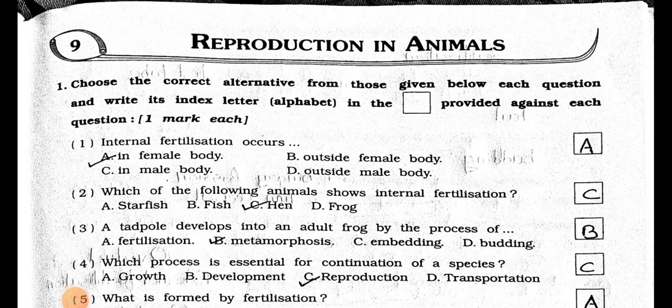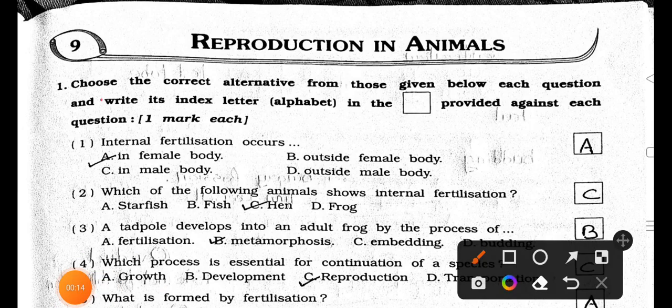Hello students, how are you all? I hope you all are fine. Today we'll see Standard 8, Subject Science. In that, chapter number 9, chapter name is Reproduction in Animals. Main 1: Choose the correct alternative from those given below each question and write its index letter. Alpha box provided against the question, 1 mark each.